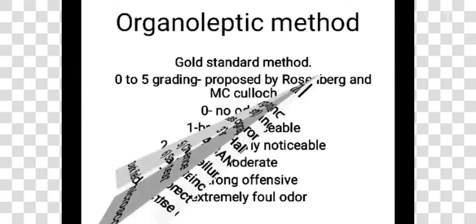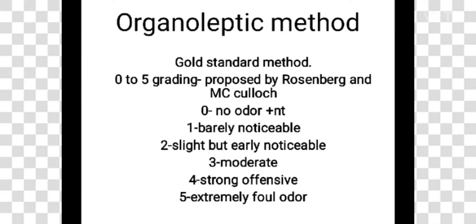The organoleptic method is the gold standard for testing halitosis. It uses a 0 to 5 grading scale proposed by Rosenberg and McCulloch: 0 means no odor present, 1 is barely noticeable, 2 is slight but clearly noticeable, 3 is moderate, 4 is strong offensive odor, and 5 is extremely foul odor.